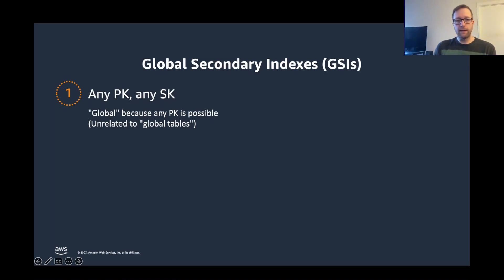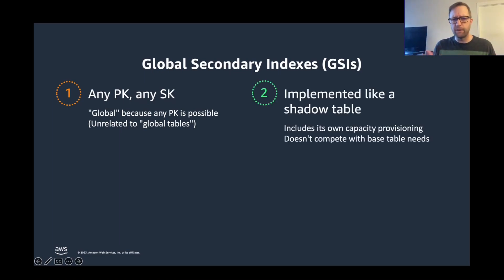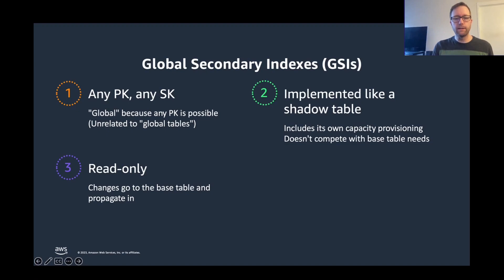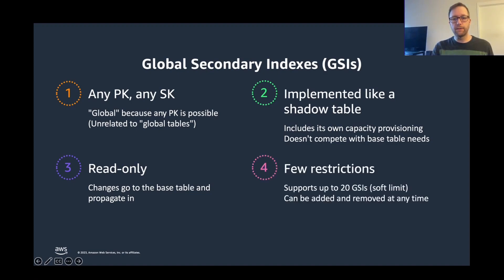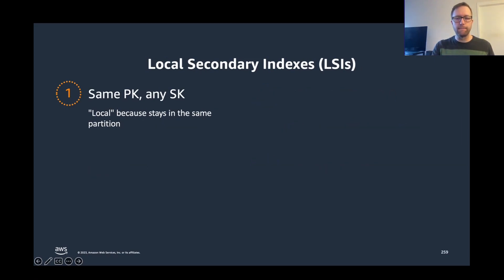GSIs, as we've said, allow any PK, any SK. It's called global because it's able to cross the entire table — nothing related to global tables. It's implemented like a shadow table, like a secondary table with its own write units and own read units. They don't compete with the base table in any way. When you do a write to the base table, it propagates over to the GSI in the background — eventually consistent. You can get up to 20 GSIs, but that is a soft limit you can request a raise on. They can be added and removed at any time; if you add one later, it will backfill and be ready once fully backfilled.